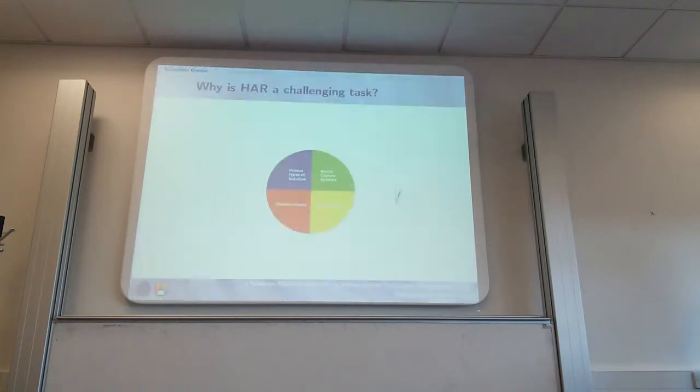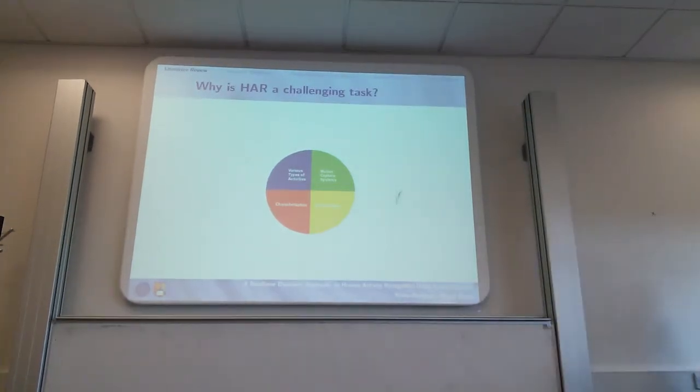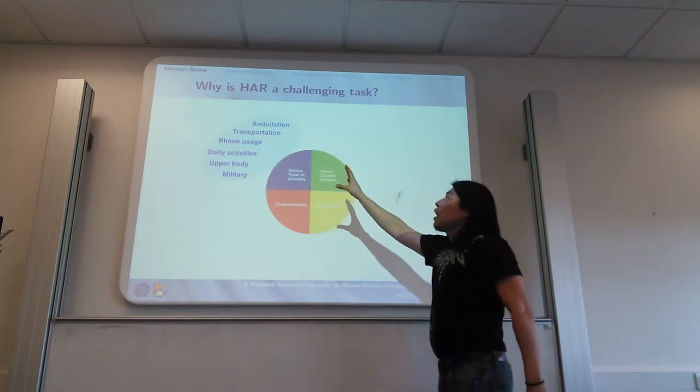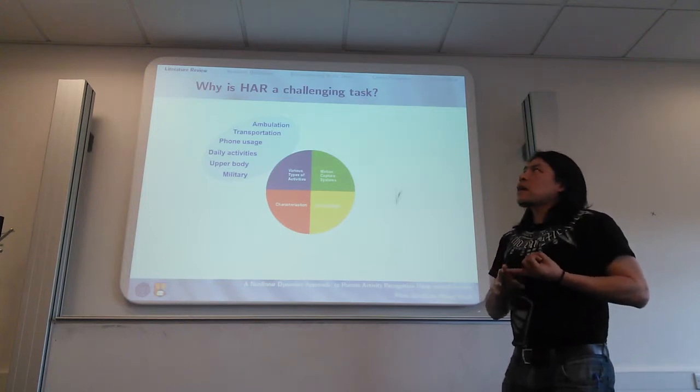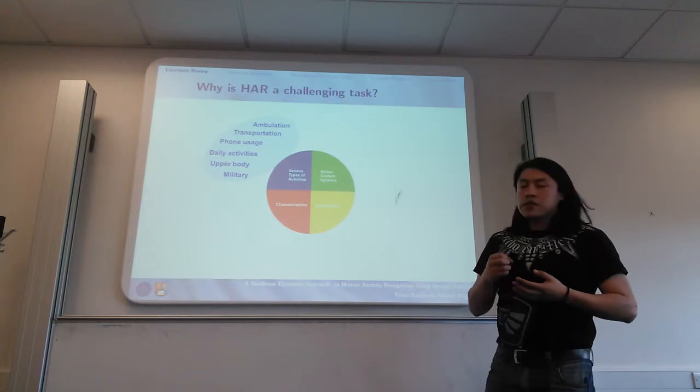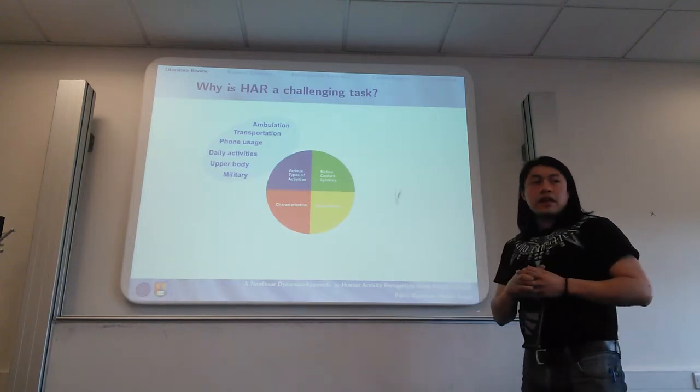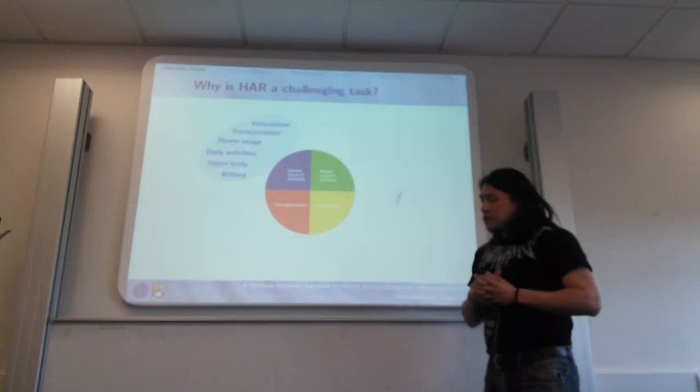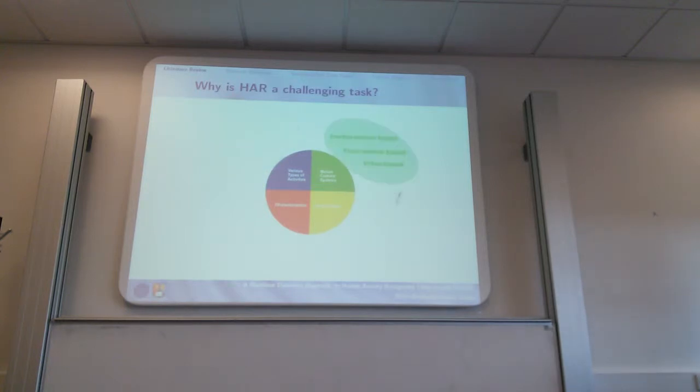To get started, let's examine why human activity recognition is a challenging task. Basically we have four different areas in which we have various types of activities. As humans we can do primitive activities such as walking, running, or riding a bike. In the case of phone usage, you text or make a call, or other daily activities like drinking, eating, speaking, or brushing your teeth. In military applications there's kneeling or crawling, so there's a great variation of types of activities.